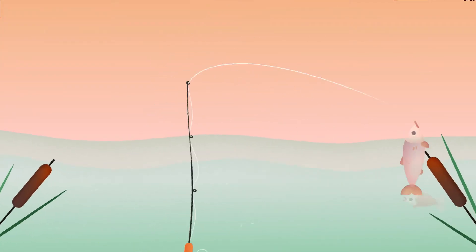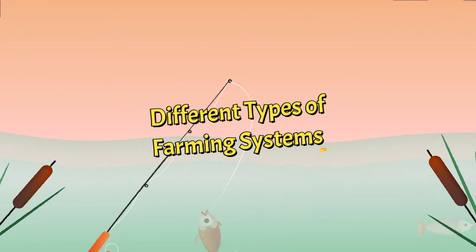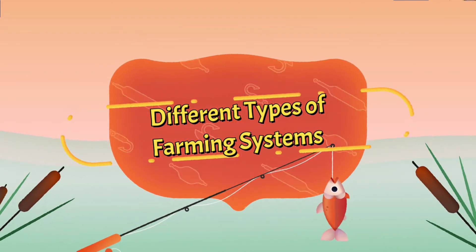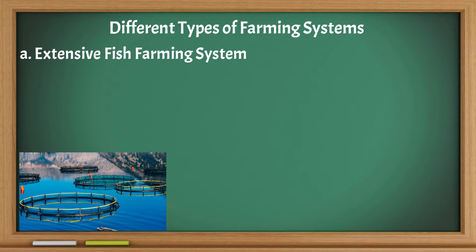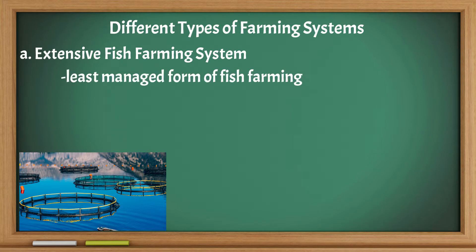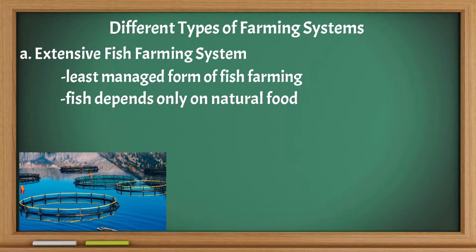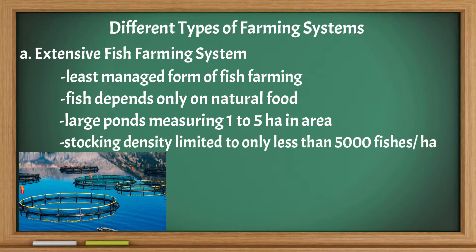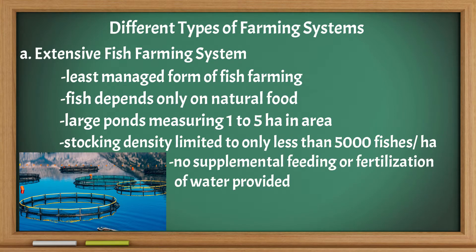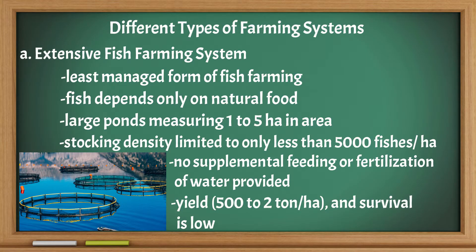There are different types of farming systems being practiced. Extensive Fish Farming System: It is the least managed form of fish farming. The fish depends only on natural food. It requires large ponds, and the stocking density is limited to only less than 5,000 fishes per hectare. No supplemental feeding or fertilization of water is provided. Yield and survival are low.